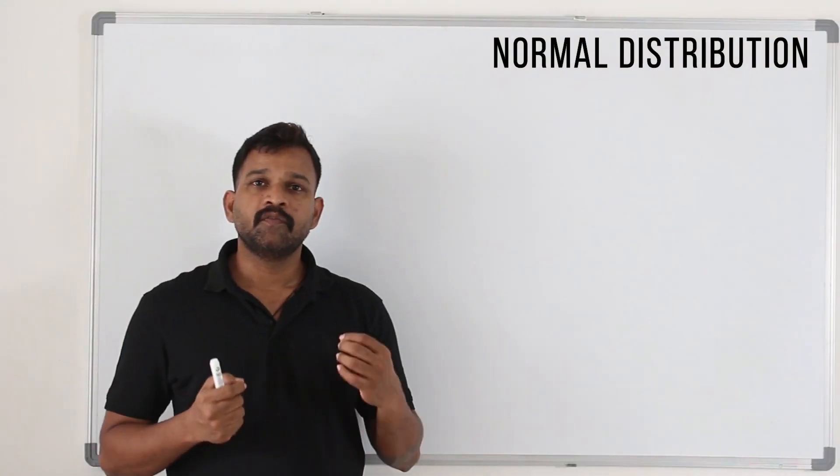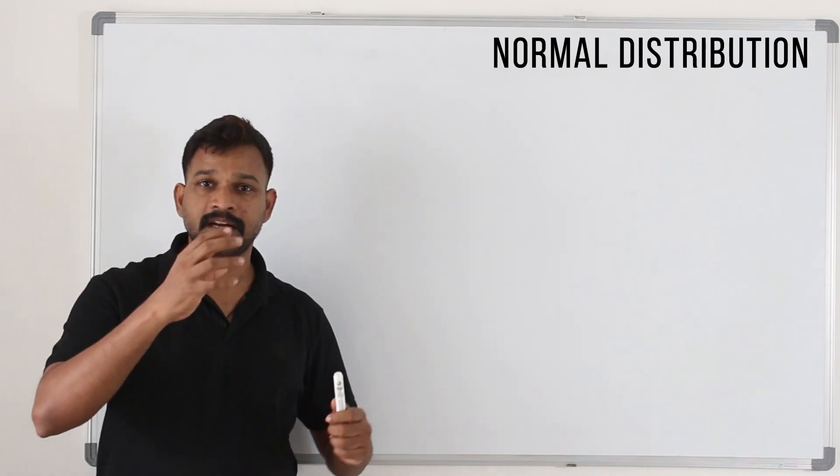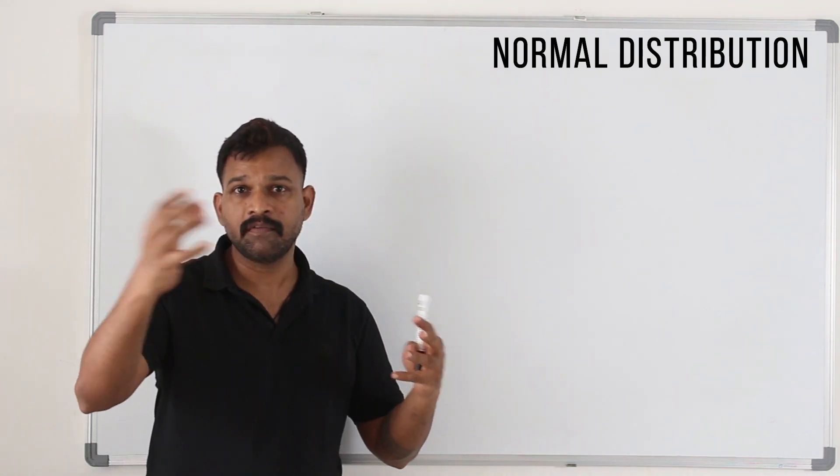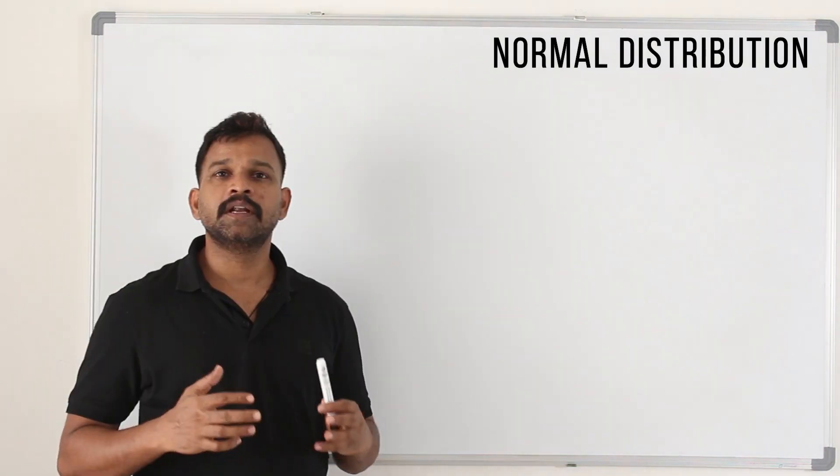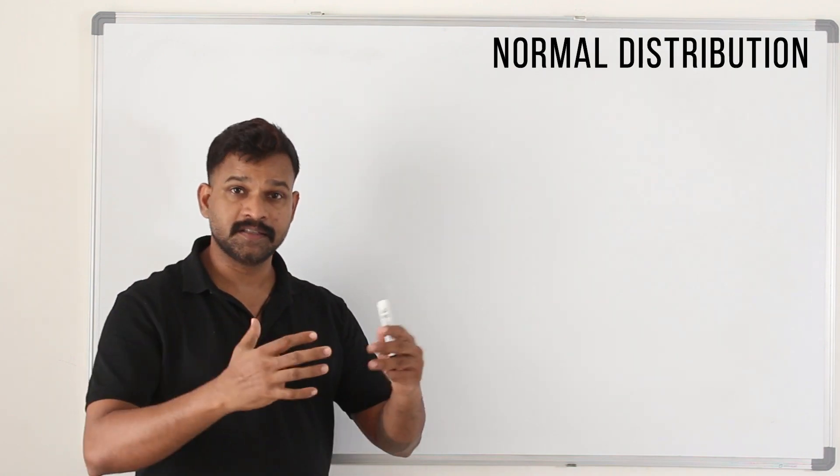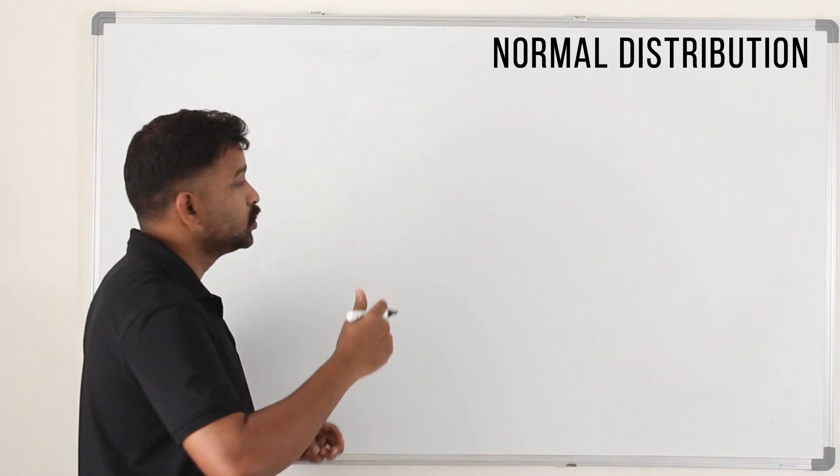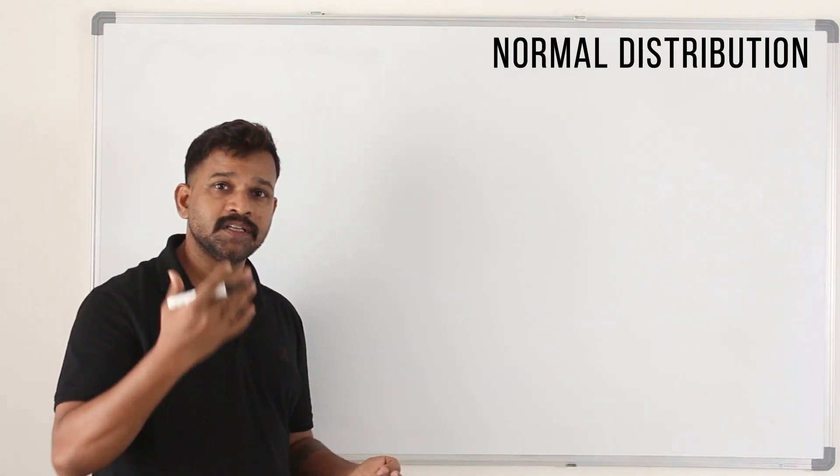First we learned about discrete random variable in chapter 4, which takes particular values. Here we're talking about continuous random variable. Let's say you're surveying the height of adults in a certain place. You always group them. That's continuous random variable, which we discussed in chapter 4.